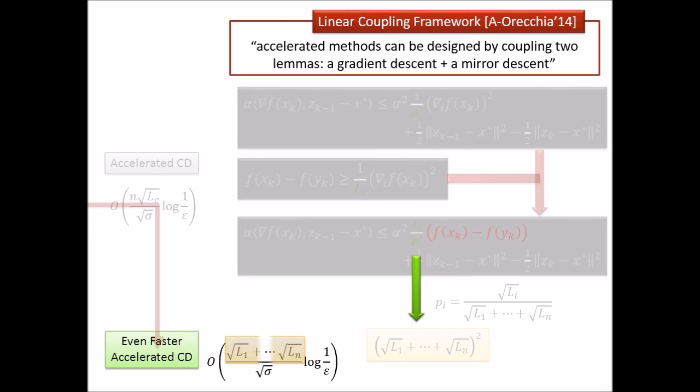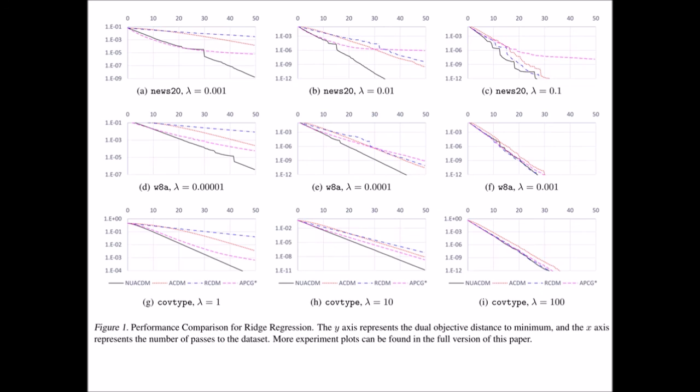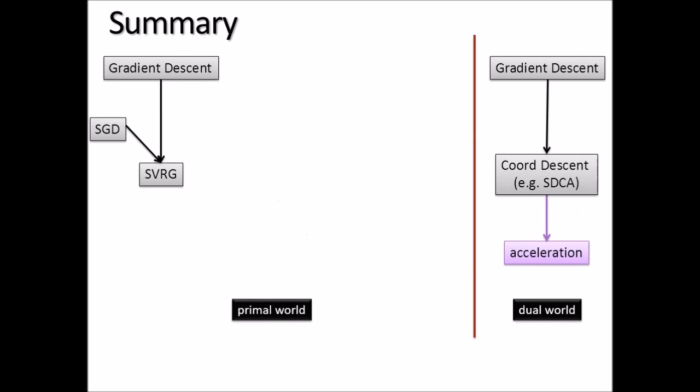We have empirical results on ERM problems with datasets having different feature vector norms, and on matrix inversion, both showing improvement over prior work. That is the summary of the first part, the second part, and the third part. Thanks.